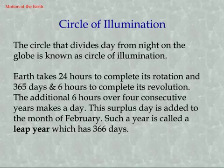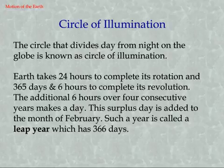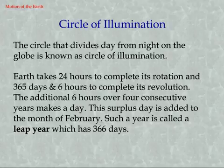Circle of Illumination: The circle that divides day from night on the globe is known as the Circle of Illumination. Earth takes 24 hours to complete its rotation and 365 days and 6 hours to complete its revolution.